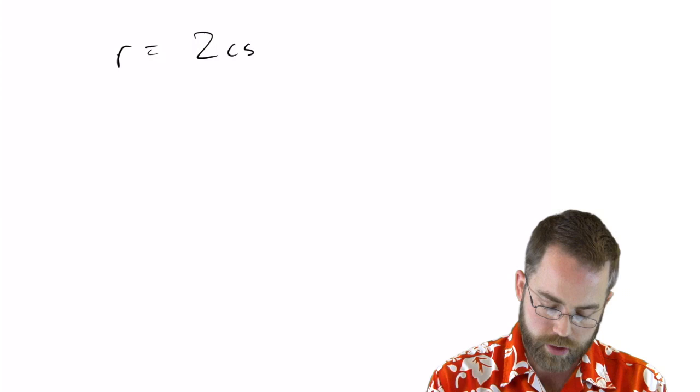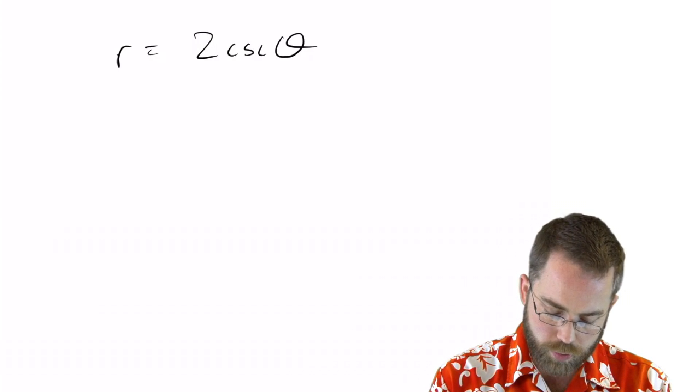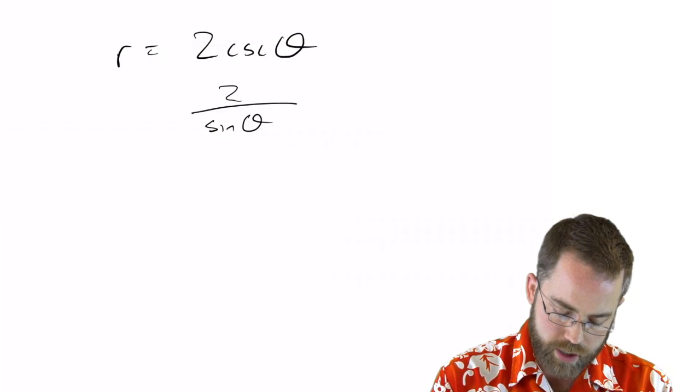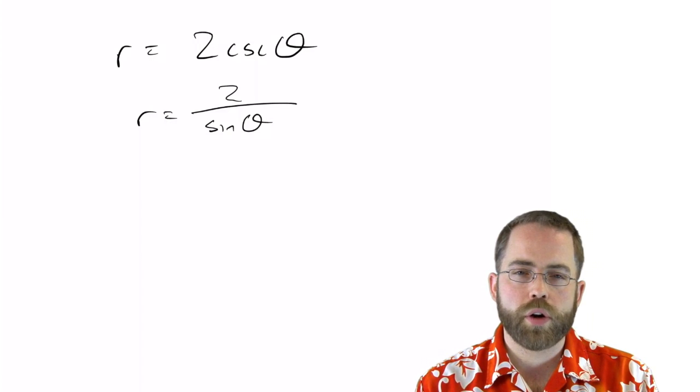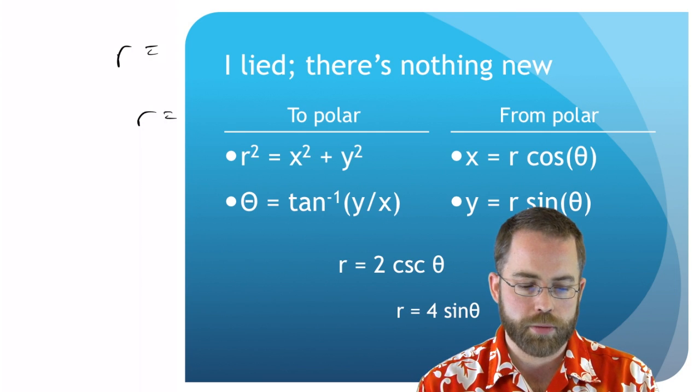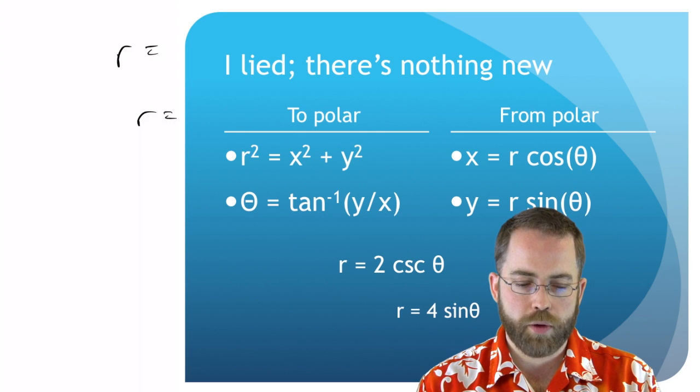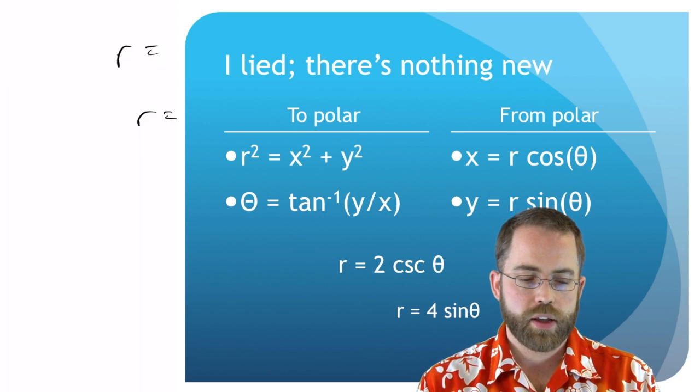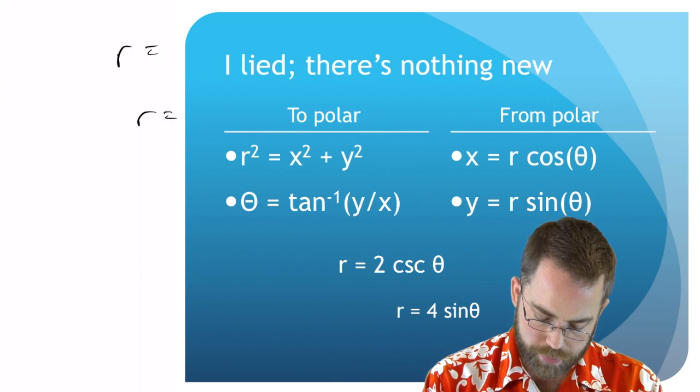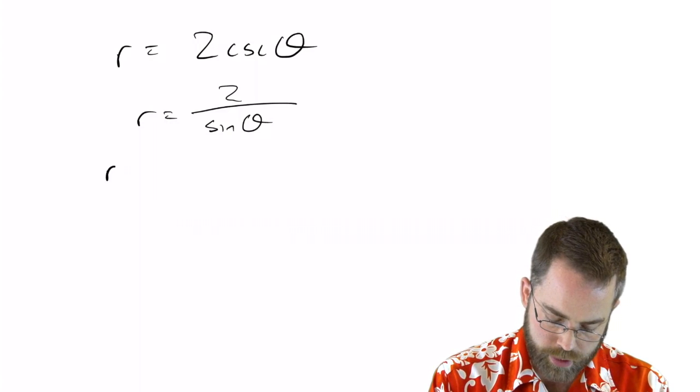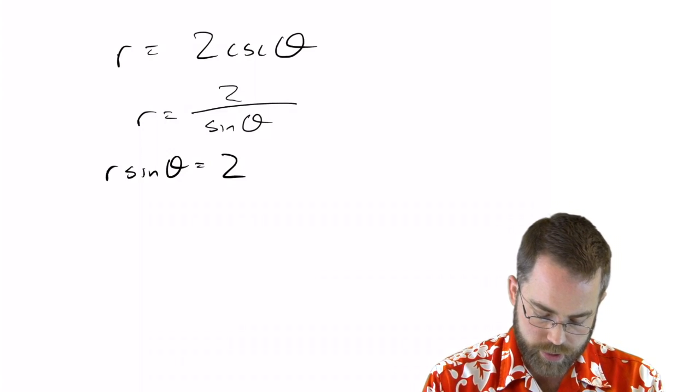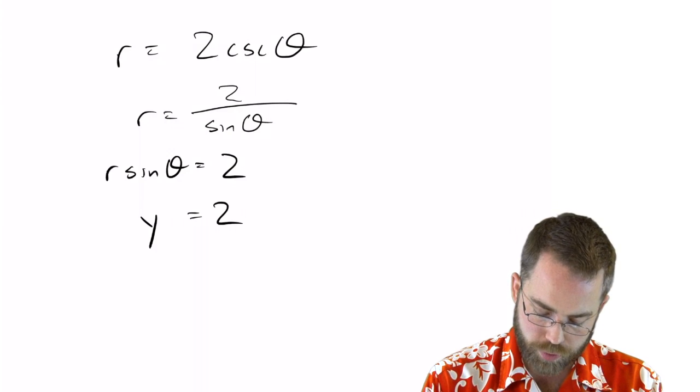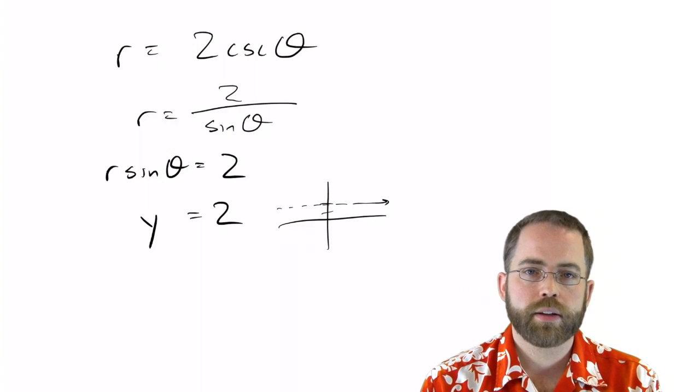What in the world is cosecant? Well, it's just one over sine. So it just is sine in the denominator. And now we look at this and we say, boy, which of these four equations, four conversion equations, am I close to being able to use? Well, I really wish that the r and the sine were next to each other because that's the equation for y. So I'm just going to multiply both sides by sine, or you can call it cross-multiplying, r sine theta equals two. And r sine theta, we said, is the definition of y. So that's just y equals two, which is why we got that line looking like that earlier.